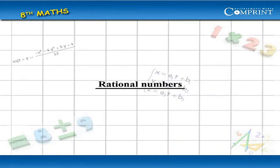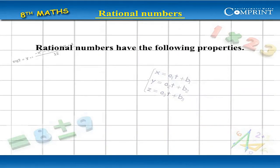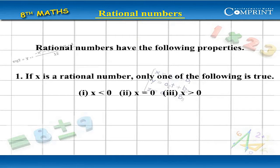Properties of Rational Numbers. Rational numbers have the following properties. 1. If x is a rational number, only one of the following is true: (i) x less than 0, (ii) x equal to 0, (iii) x greater than 0.